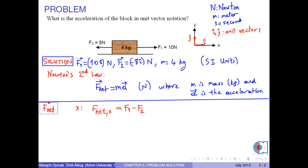Therefore, f net x equals f1 minus f2. With the numerical values, it is 2 Newtons.